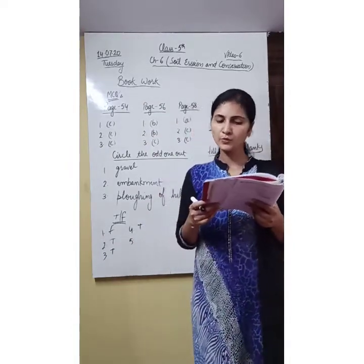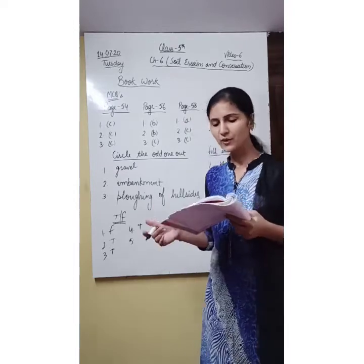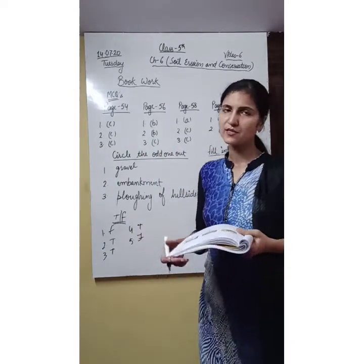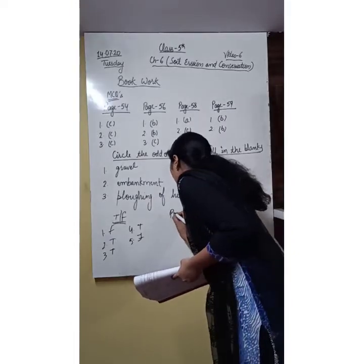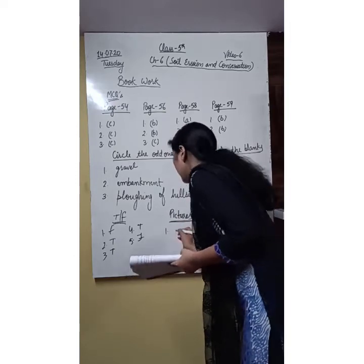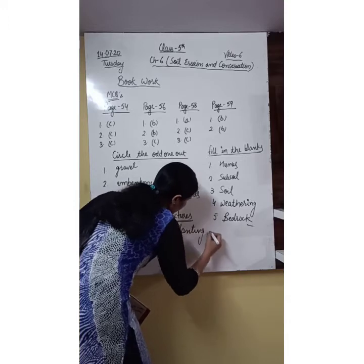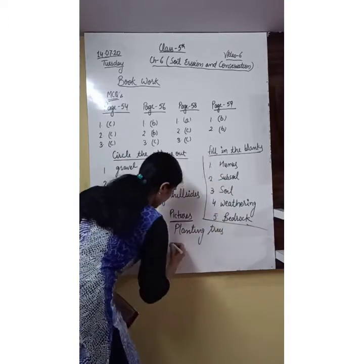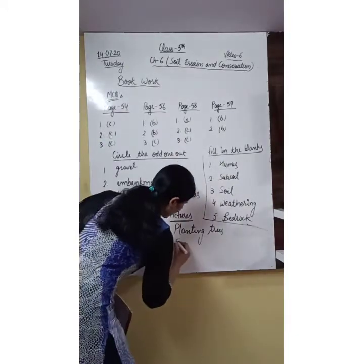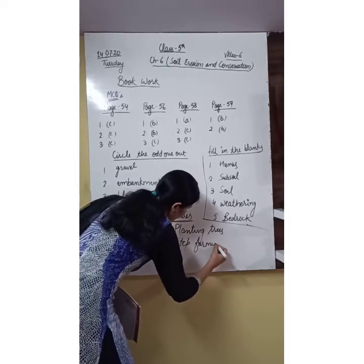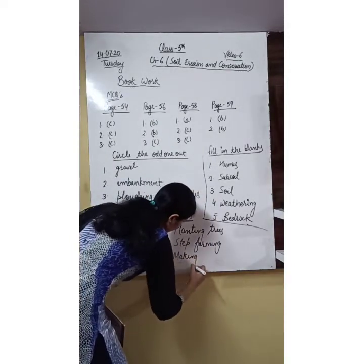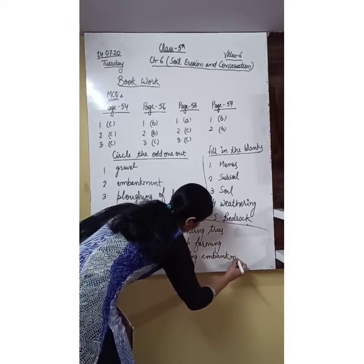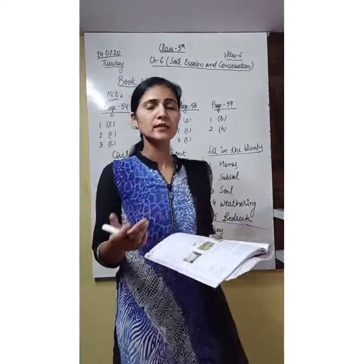Next: flooding of rivers cannot be caused by soil erosion — false, flooding of rivers actually causes soil erosion. Now we have three pictures in which you have to write the names. First picture is planting trees — a child is planting trees. Next one is step farming, which we discussed in soil conservation. Next one is making embankments — you can write embankments, that will also be correct.